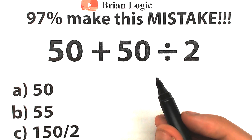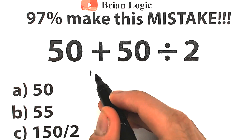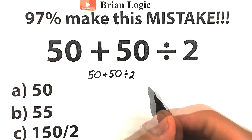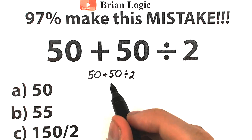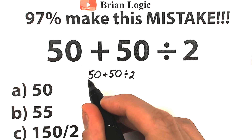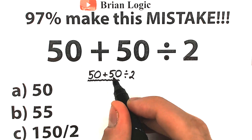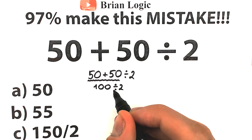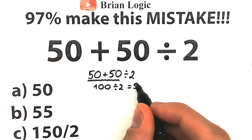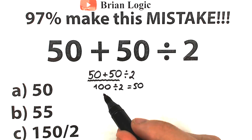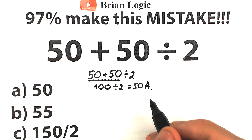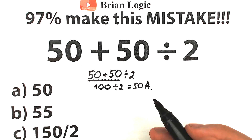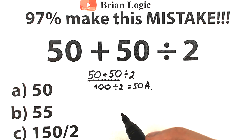There are two types of people. One group solves this question by going left to right: they see addition and division, so they do 50 plus 50 equal to 100, and then 100 divided by 2 equal to 50. That gives option A. But whatever order of operation we select is going to create a different answer, so we need to understand the correct order to do this problem.